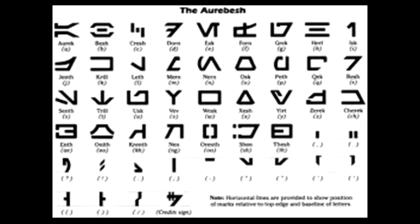Enth, A-E. Oneth, E-O. Krenth, K-H. Nen, N-G. Orenth, two O's. Shen, S-H. Thresh, T-H. And forms of abbreviations and apostrophes and such.